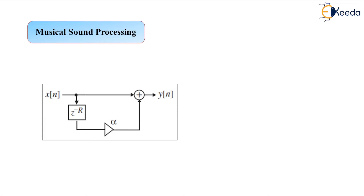Here we shall have a brief introduction to musical sound processing. We are going to categorize it into two types — more specifically, digital implementation of spatial audio effects can be classified into two types. The first type is time domain operations, which can generate echoes, reverberation, flanging, chorus generation, and phasing. The second category is frequency domain operations, where digital filters and equalizers accomplish the selected task. In this video we shall be confined to only the first two types: echo generation and reverberation, which belong to time domain operations.